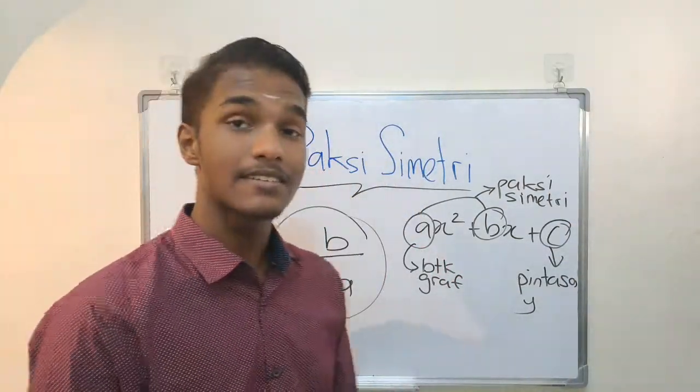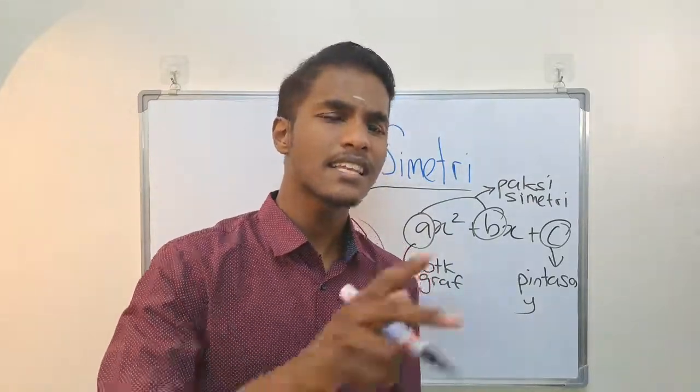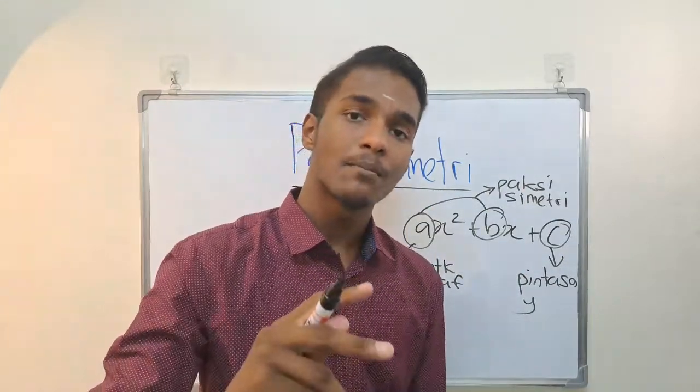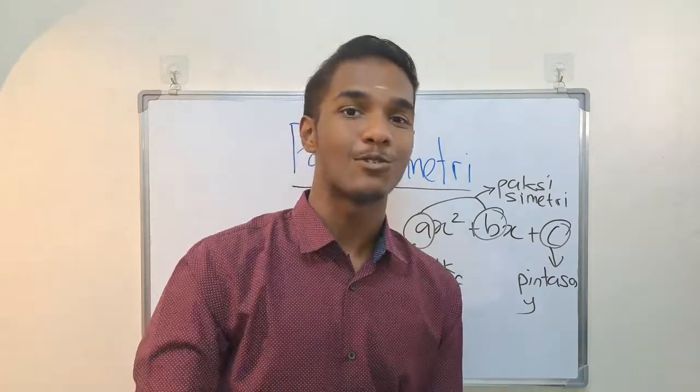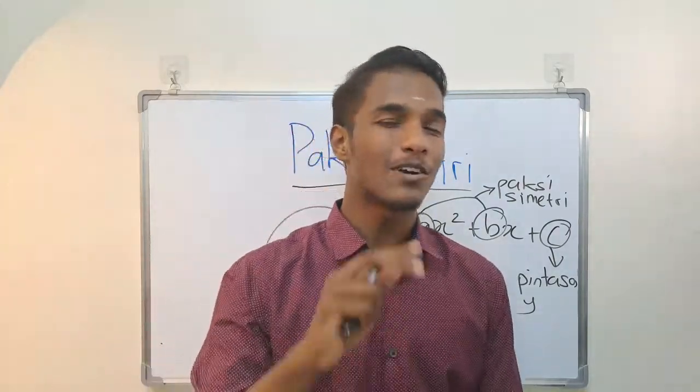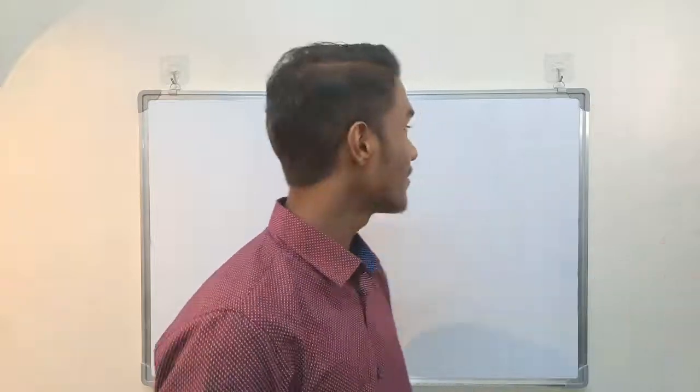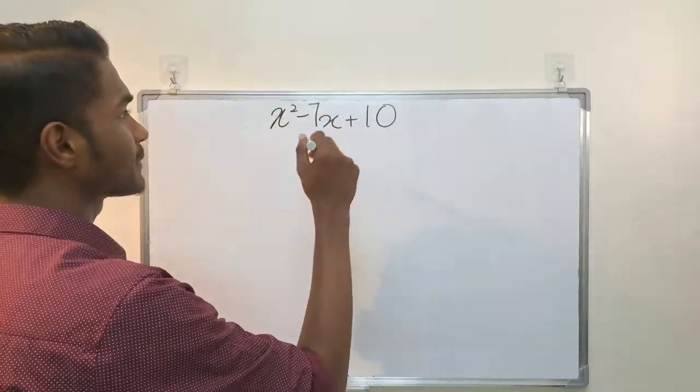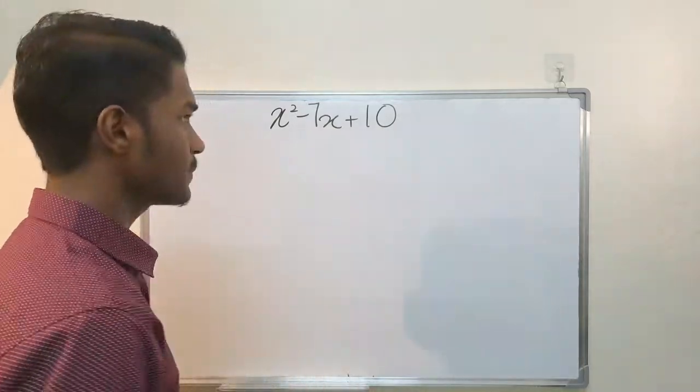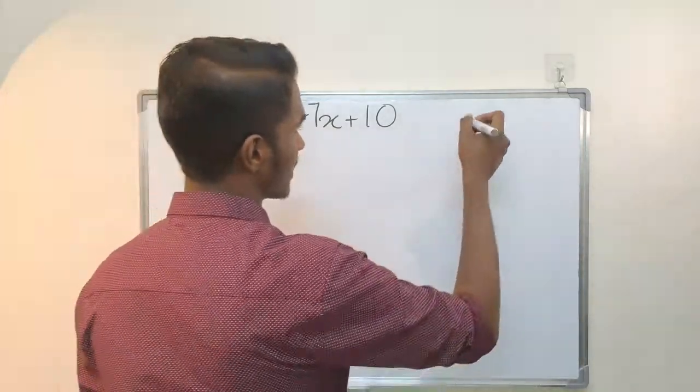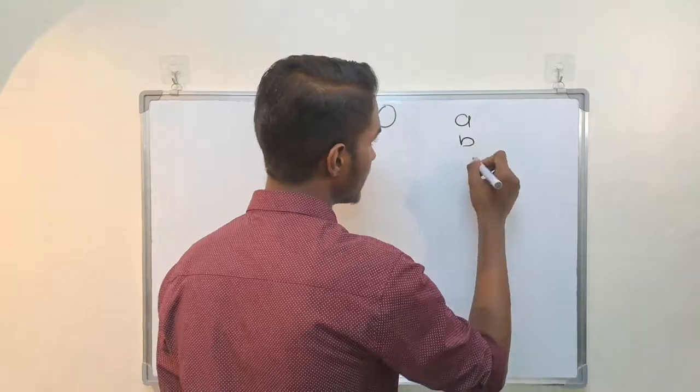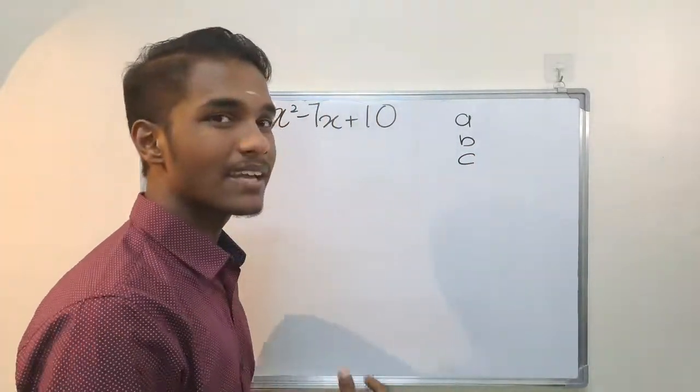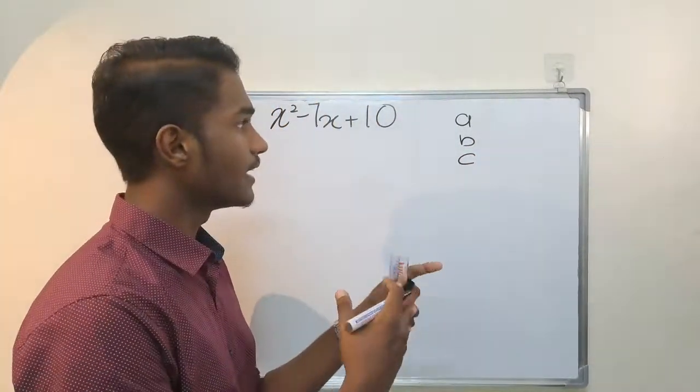We start following these steps. Let's start the first one. The first one is x² minus 7x plus 10. So what I suggest is first we identify a, b, c values.